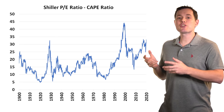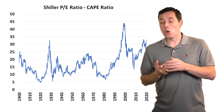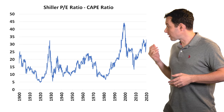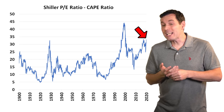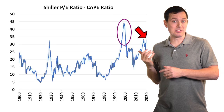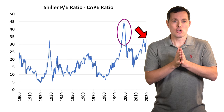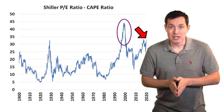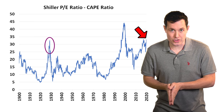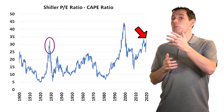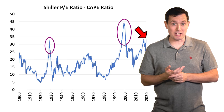Once we average things out and adjust for inflation, we can see that the stock market is on the high end right now. It's not quite as crazy high as some of the other peaks in this chart, but it's important to recognize that right now it's about as high as it was at the peak of the Great Depression. It is a bit lower than during the financial crisis, but still, that's pretty high.